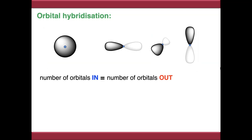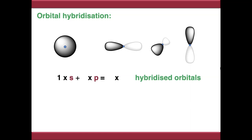One rule to bear in mind when mixing orbitals — whether atomic or molecular — is that the number of orbitals you mix into the process must equal the number of orbitals which come out. You can't create or destroy matter. So if we mix one s orbital with a number of p orbitals, we will get the same number of hybridised orbitals out.